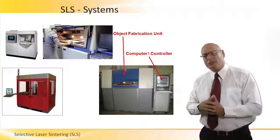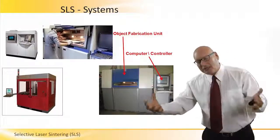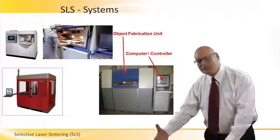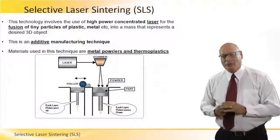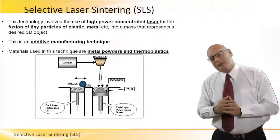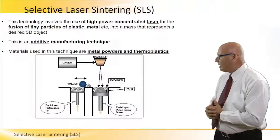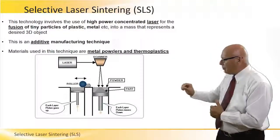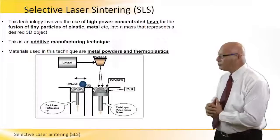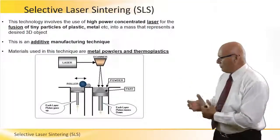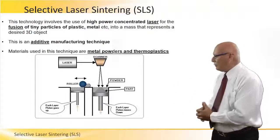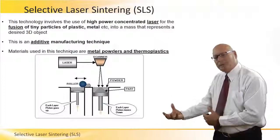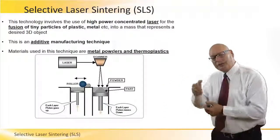Inside the OFU, beyond the laser beam and all the optical devices that make up the SLS technology, there are also tanks for the raw materials. The principle of operation: a high-power concentrated laser at the top sends a beam to a scanner, which is controlled by the computer. There are two pistons — the one on the left holds the raw material, and it goes up with every cycle, every layer.